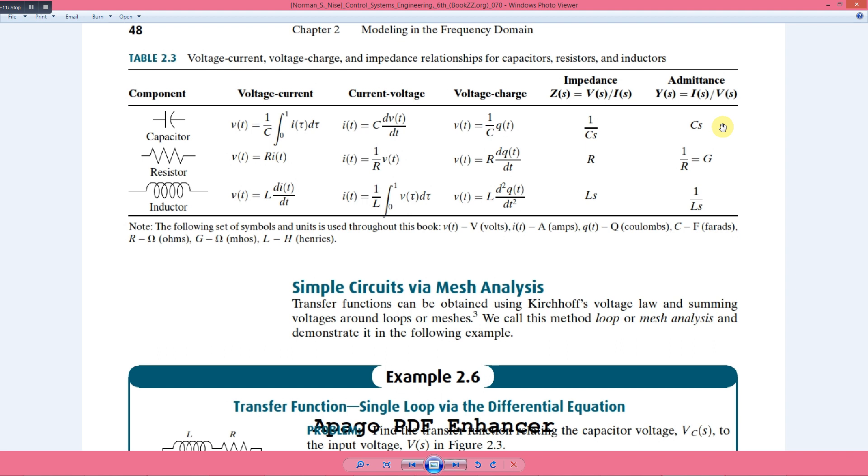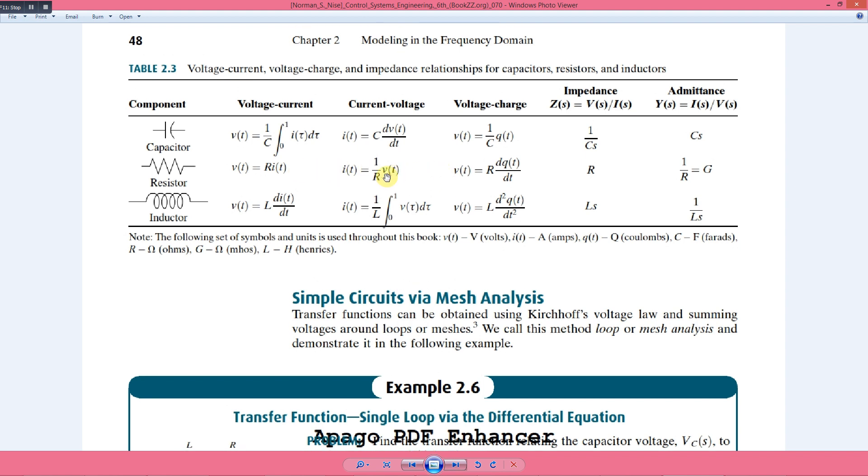For resistor we have v is equal to iR, Ohm's law, or i is equal to v over R, and v is equal to R into dq/dt.